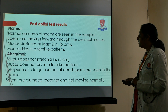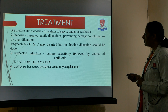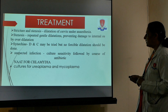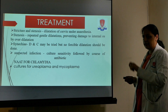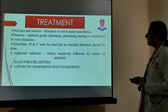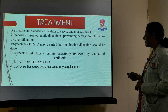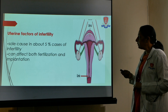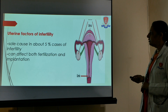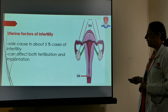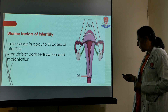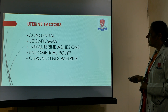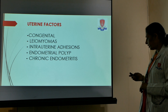Treatment: if there is stricture or stenosis, gentle dilatation can be done; synechiae can be broken by D&C, but no forcible dilatation should be attempted to avoid a false passage. If infection is suspected, culture and sensitivity should be done followed by a course of antibiotics. Uterine factors account for about 5% of infertility and can affect both fertilization and implantation. These include congenital anomalies, leiomyomas, intrauterine adhesions, endometrial polyps, and chronic endometritis.